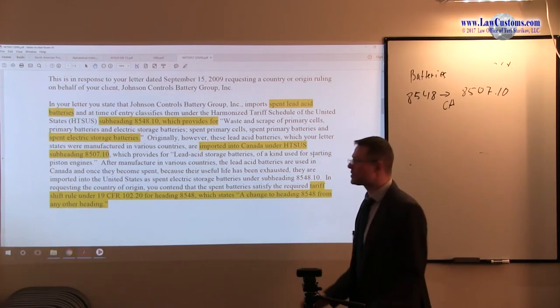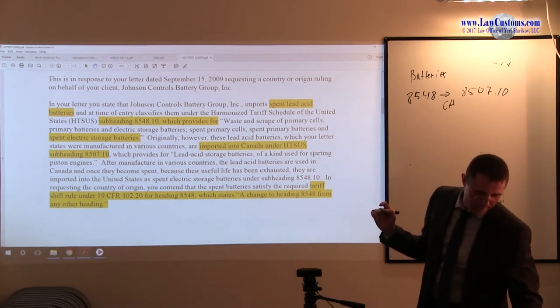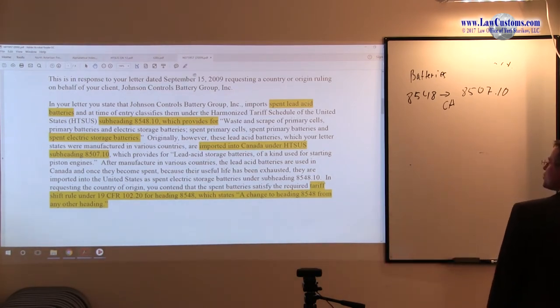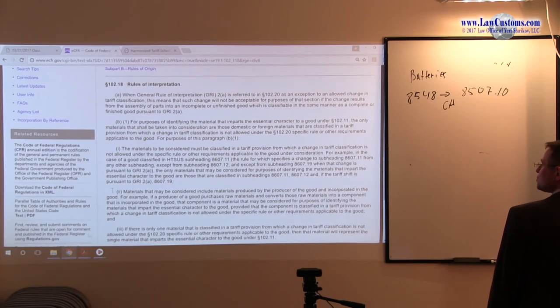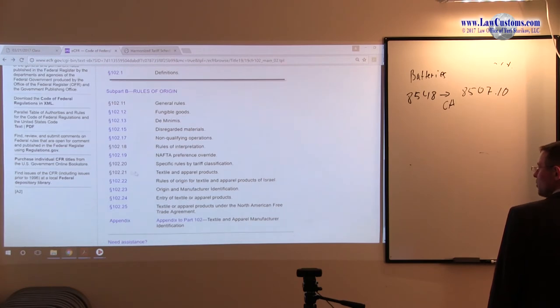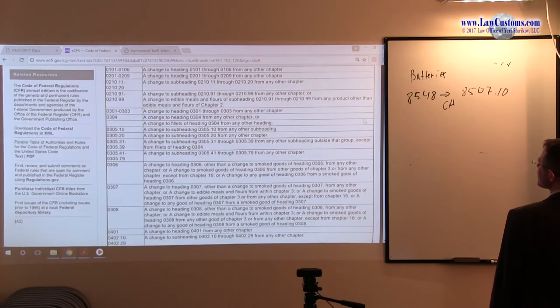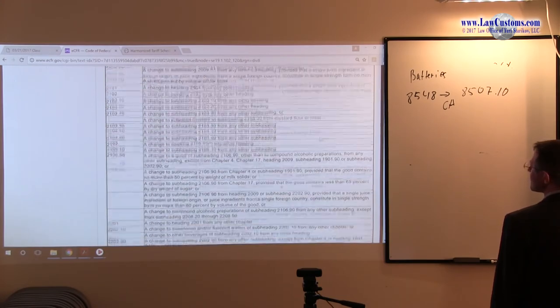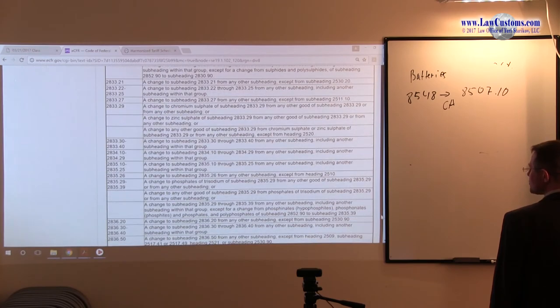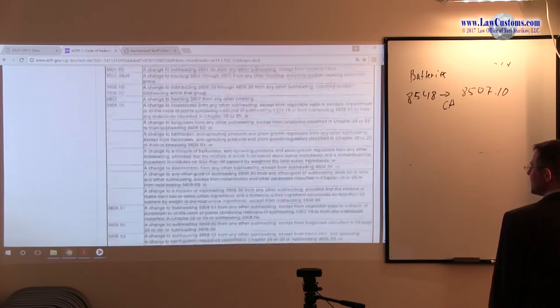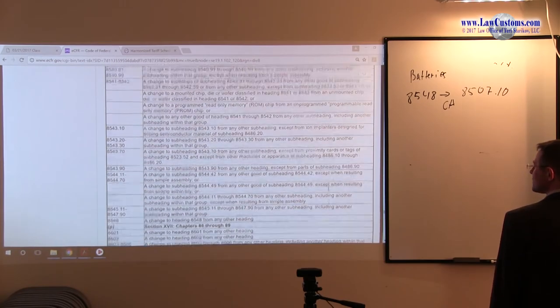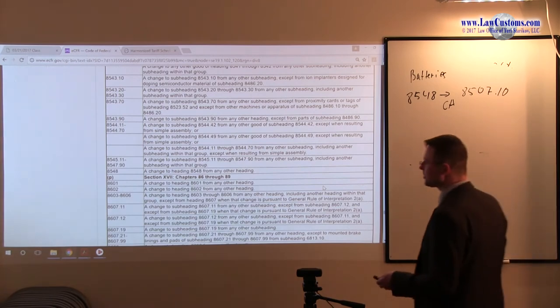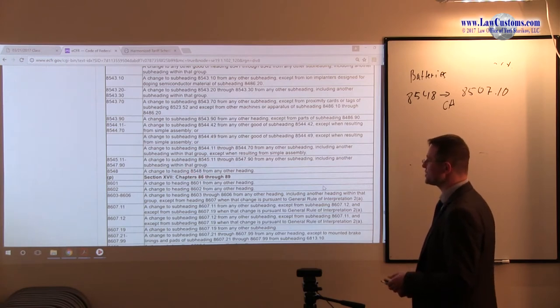So the question is, is there enough transformation? If we take a look at the change at the rules of origin. So we're going to go to 102.20, our tariff shift rule provision. 102.20, our tariff shift rule provision. And we're going to scroll to the 8548. 8548 is available right here.